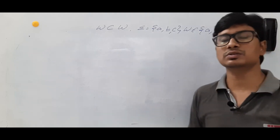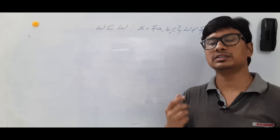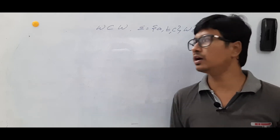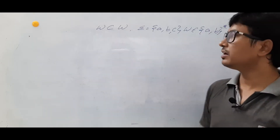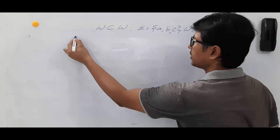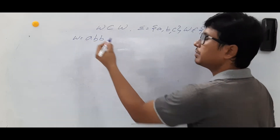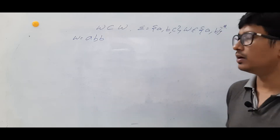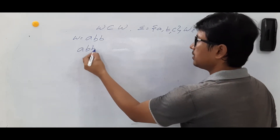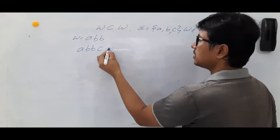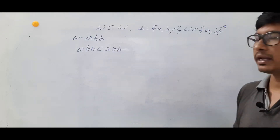What is meant by Kleene closure? It can consist of epsilon, length one strings, length two strings, and so on to infinity. Now, let's take W as ABB. Then the string will generate A, B, B, C, A, B, B.